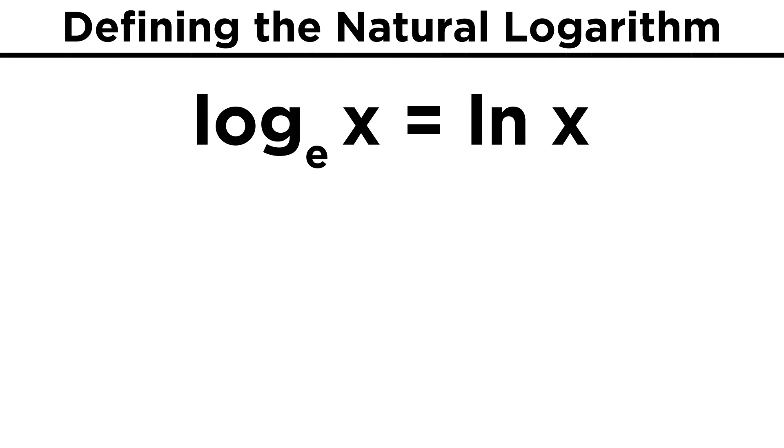Because E is the natural base, when we use logs of base E, they are called natural logarithms, or natural logs. When we use these, instead of writing log base E of x, we can abbreviate this by writing ln of x.